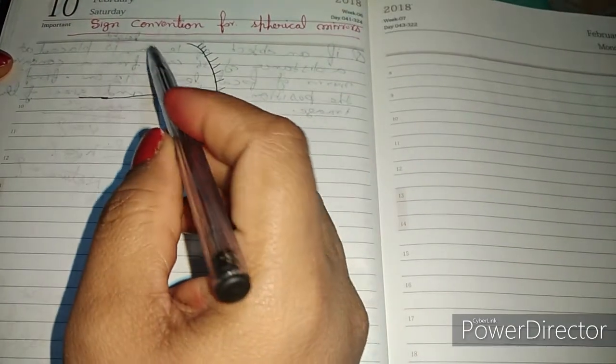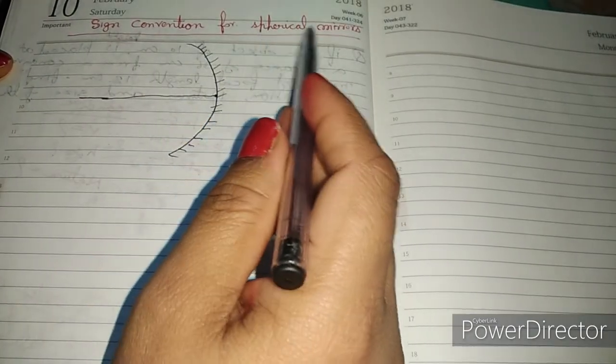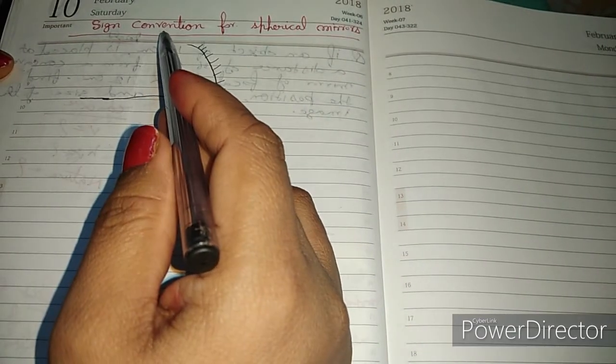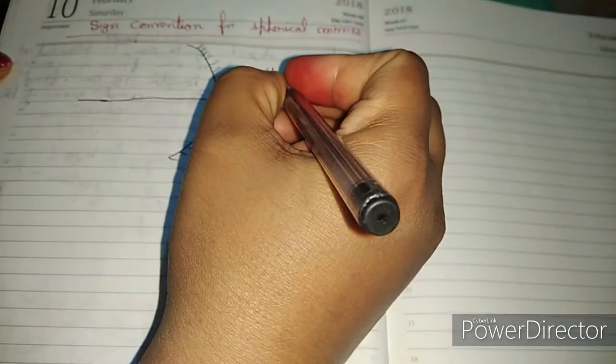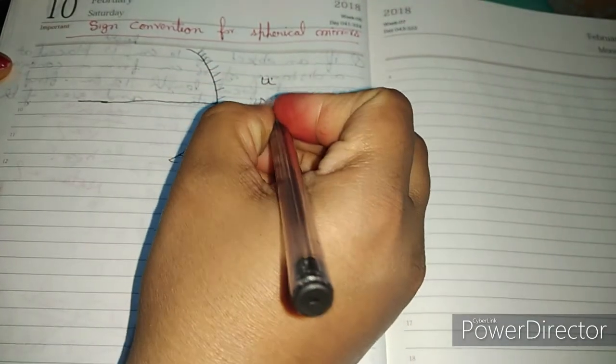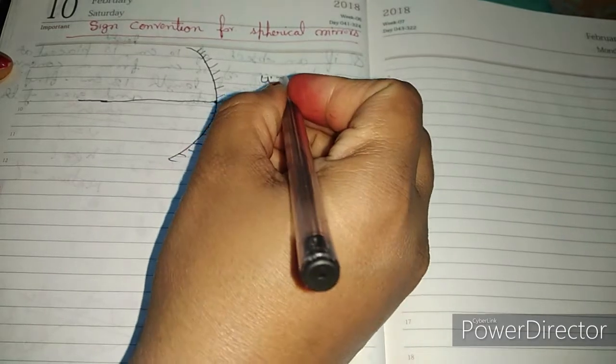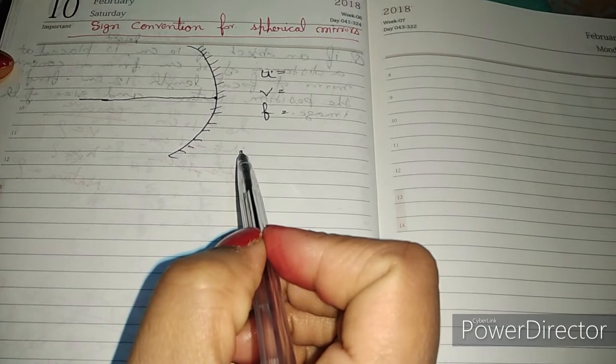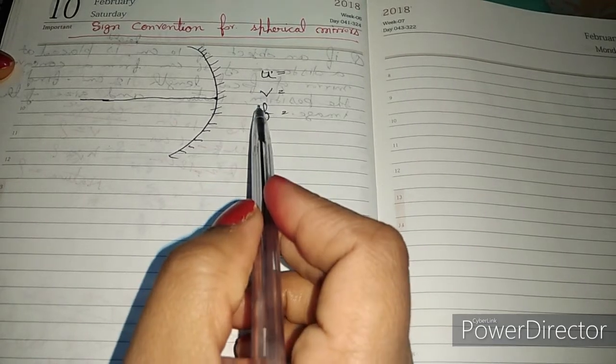Now we will look at sign convention for spherical mirrors. We need sign convention for numerical problems. We know that U, V, and F - what are the signs in the concave mirror and convex mirror? When we don't know this, we will not solve the numerical.